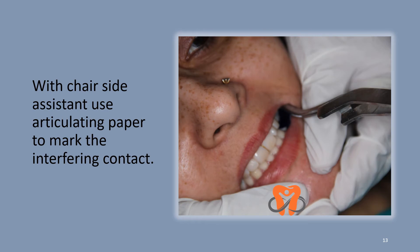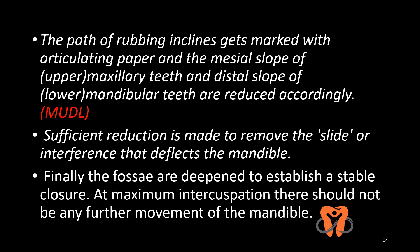With the assistant's help, use an articulating paper to mark the interfering contact. We had moved the mandible up slowly until we got the first initial contact, then asked the patient to close the mouth tightly and noted the slight slide in the mandible — called slide-in centric. Then we placed the articulating paper in the mouth and marked the interfering contact. The path of the rubbing inclines gets marked with the articulating paper. To remove these centric relation interferences, we remove the mesial slope of the upper (maxillary) teeth and the distal slope of the lower (mandibular) teeth. The acronym used is MUDL. Sufficient reductions are made to remove the slide or interference that deflects the mandible.